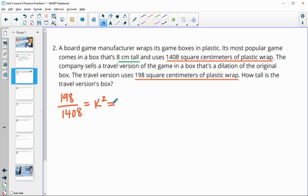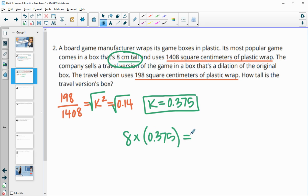So 198 divided by 1,408 gives us a K squared of 0.14. To figure out our scale factor, we're going to square root that. The square root of 0.14 is 0.375. They gave us the height, and since this is just a measurement, we're going to take the original height times the scale factor, which gives us our new height of 3 centimeters.